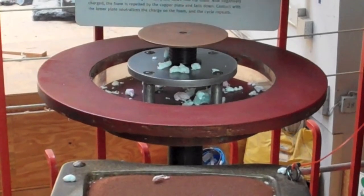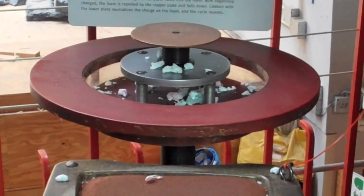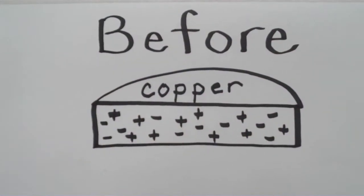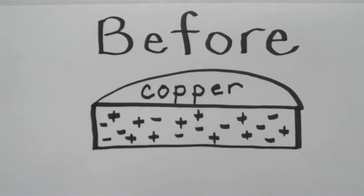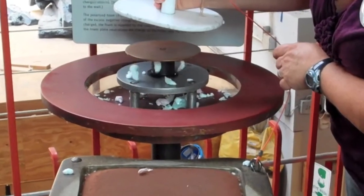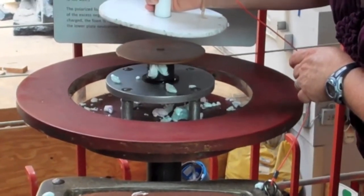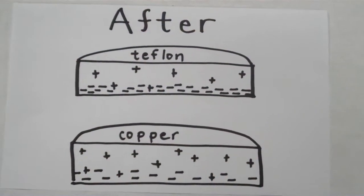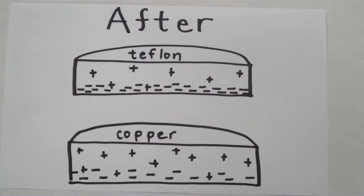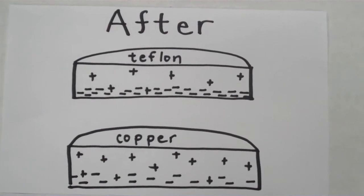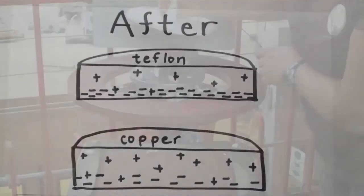The copper plate starts out just like the Teflon with equal charges of positive and negative throughout the plate. Then when I bring the Teflon close to the copper plate, I induce some changes in the copper. The electrons in the copper are repelled from the electrons in the Teflon and move toward the bottom of the copper.